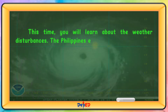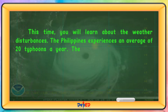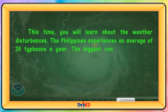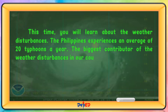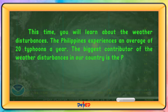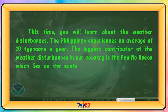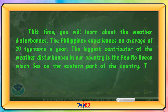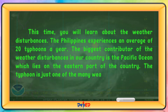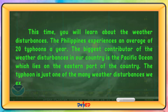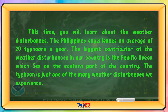The Philippines experiences an average of 20 typhoons a year. The biggest contributor of the weather disturbances in our country is the Pacific Ocean, which lies on the eastern part of the country. The typhoon is just one of the many weather disturbances we experience.